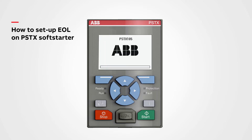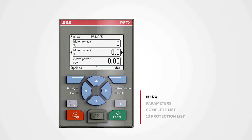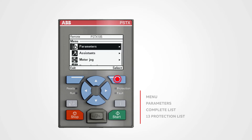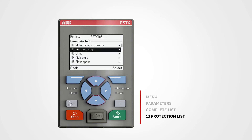How to set up EOL on PSTX soft starter: first click menu, then select all parameters, after that select the complete list. Navigate down to number 13 and select protection list 1.